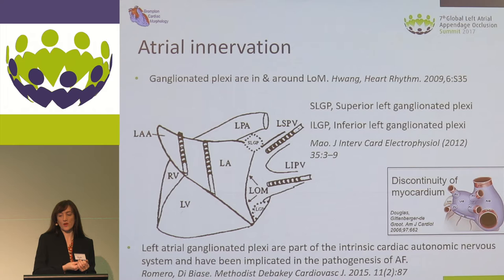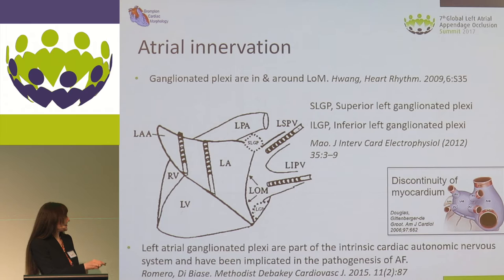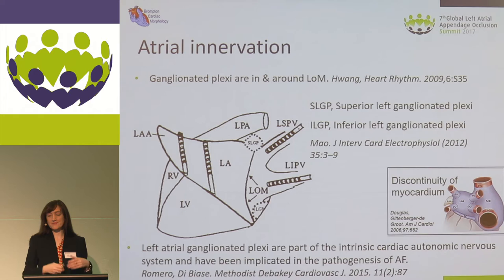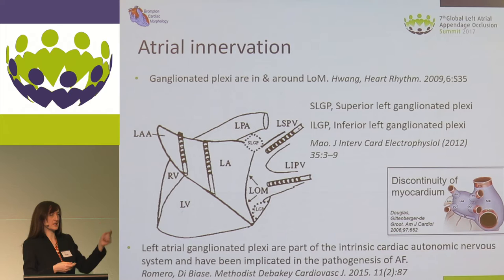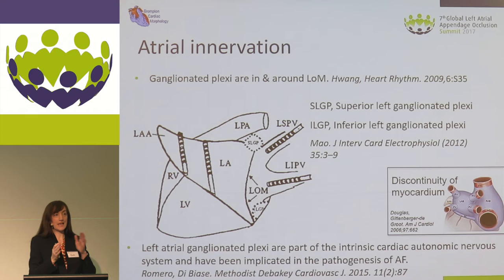Another important point in the realms of the os is atrial innervation. There are ganglionated plexi around that ligament of Marshall — termed here the ligament or vein of Marshall. We can see those in a superior portion and at the inferior region, and they connect in between. That's part of the intrinsic cardiac autonomic nervous system, and it has been implicated in the progression of AF. And thinking back to the first slide on embryology, there's the discontinuity of the myocardium from the atrial appendage to the body of the rest of the atrium, which might be a factor in the creation of AF.